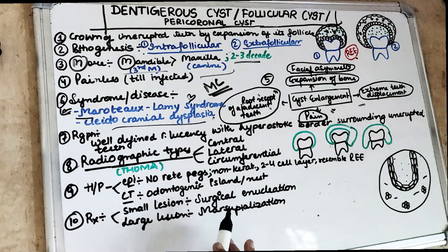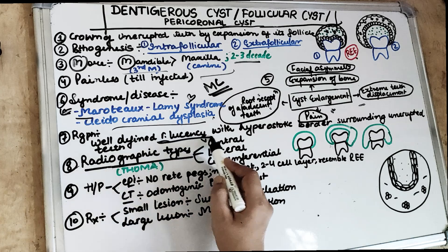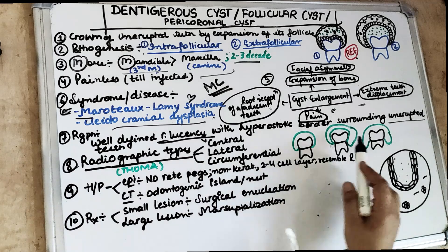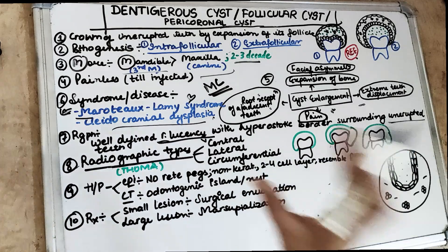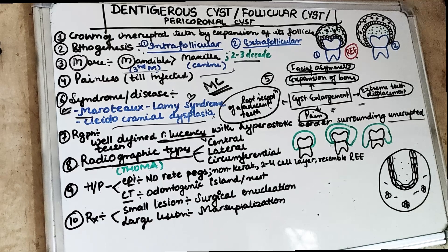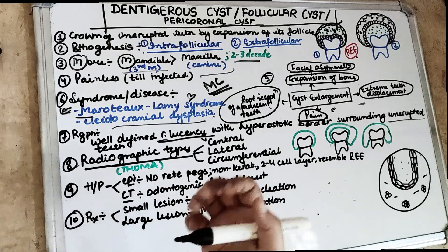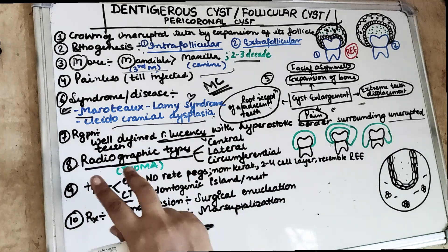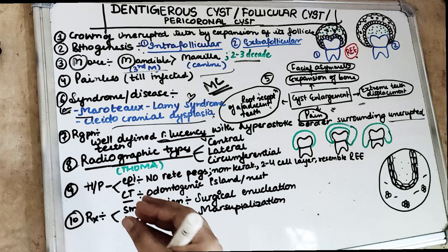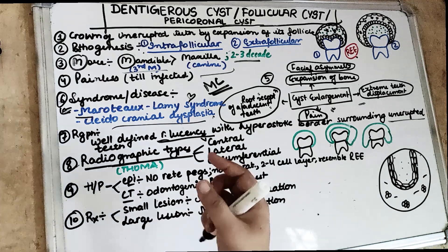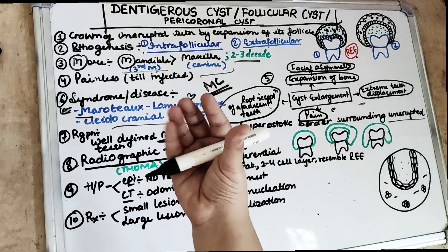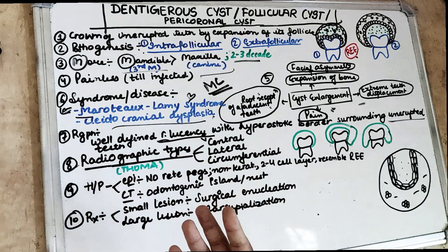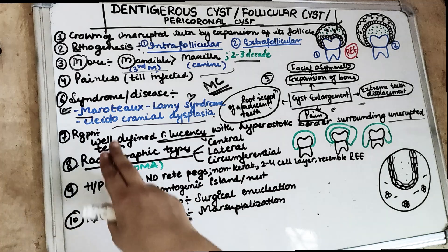Talking about radiographic appearance: there is going to be a radiolucency around the impacted or unerupted teeth with hyperostotic borders. So a well-defined radiolucency is seen. But if it is infected, then there can be ill-defined or hazy borders. Otherwise, radiographically it is well-defined. When the cyst is enlarged significantly, it can extend close to the maxillary antrum or the maxillary sinus and may also displace the maxillary sinus.